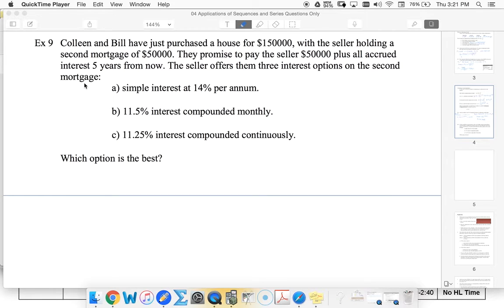Colleen and Bill bought a house for $150,000, with the seller holding a second mortgage of $50,000. They're going to pay the seller $50,000 plus all the incurred interest five years from now. Obviously they want to pay the smallest amount, so let's see which interest rate they should take.